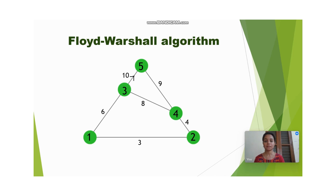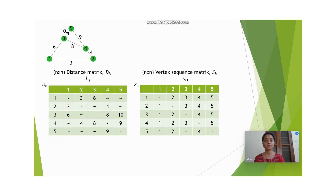Now let us see an example. This algorithm is applicable for both directed and undirected weighted graphs. In this example, edge 3-5 is a directed weighted edge while the rest of the edges are undirected. First of all we have to compute the distance matrix and the vertex sequence matrix. The distance matrix is denoted by dk and it is an n by n matrix where n is the number of vertices.